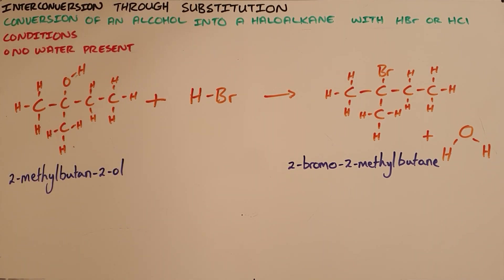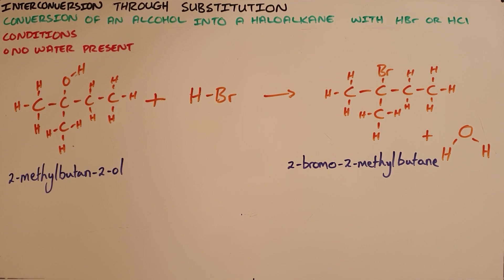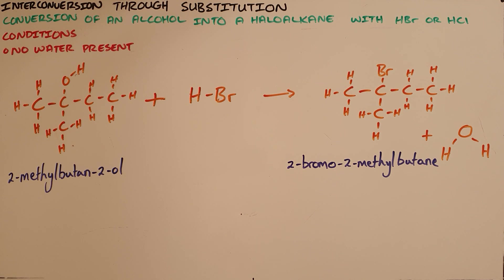Interconversion through substitution is the conversion of an alcohol into a haloalkane, most often using hydrogen bromide or hydrogen chloride, and this reaction can take place on condition that there is no water present.